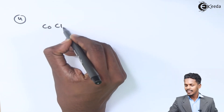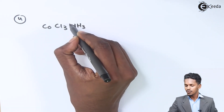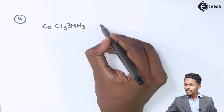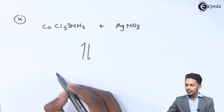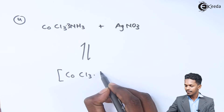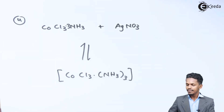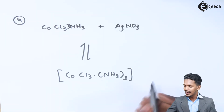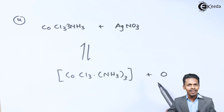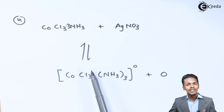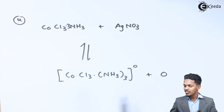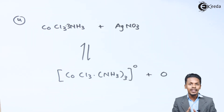The fourth example: CoCl₃·3NH₃. When treated with AgNO₃, this reaction is reversible and we get the complex CoCl₃·3NH₃. Here no ions are produced — the complex is neutral and there is no effect of AgNO₃ because all six groups are associated with cobalt, so there is no precipitate.